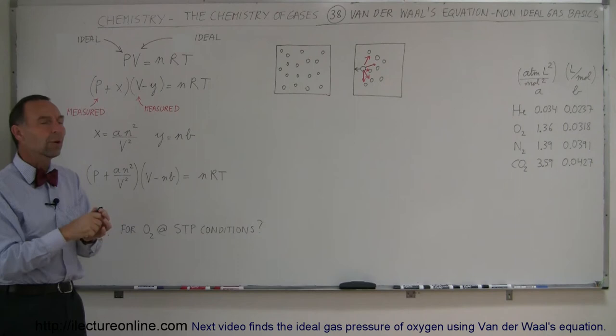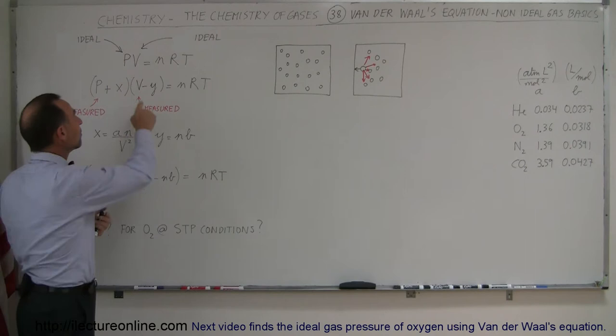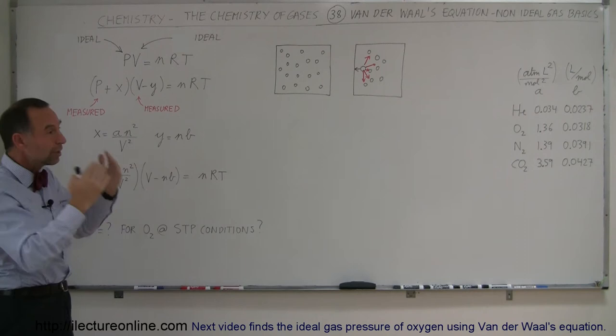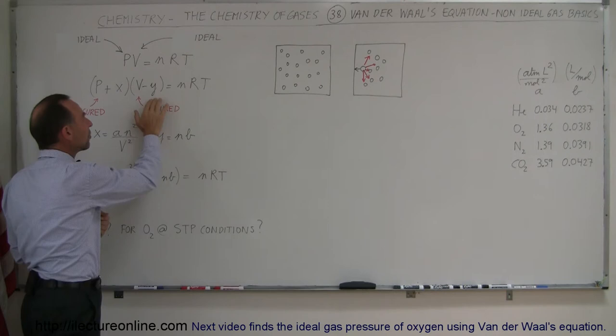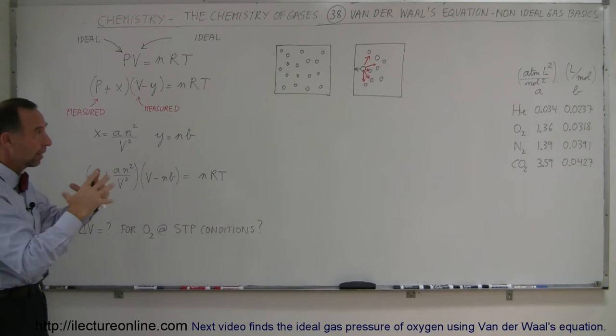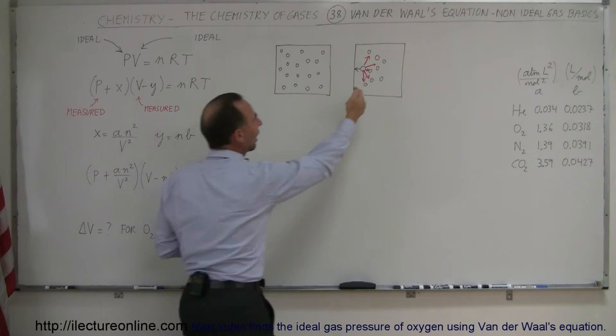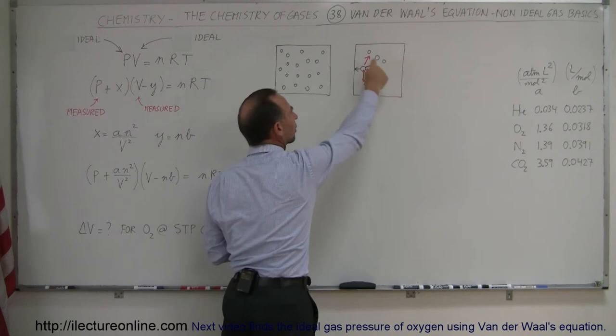Let's say the measured volume of the container is 10 liters. Once you put gas in there, the gas molecules occupy a little bit of space, so the effective emptiness of the container is actually less than 10 liters. The measured value of the container is greater than the real value experienced in the ideal gas equation, so we need to subtract a small amount. As molecules bounce against the wall, they're also being pulled back a little by the attractive force of other molecules.